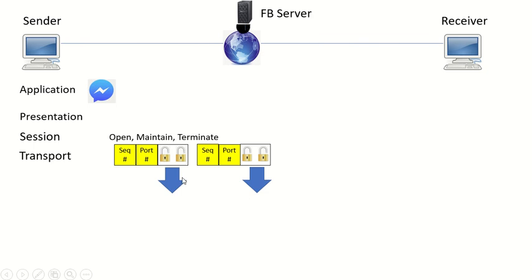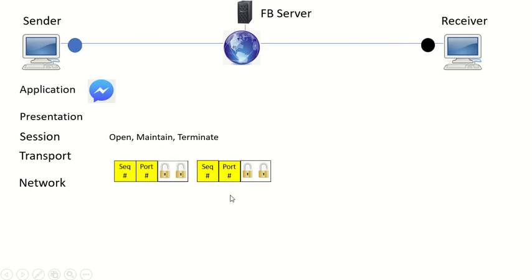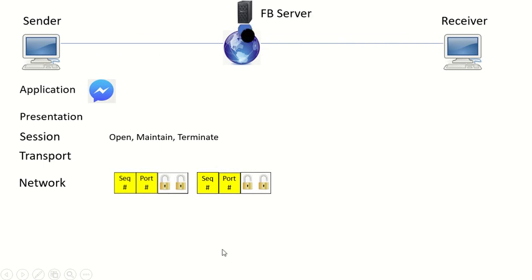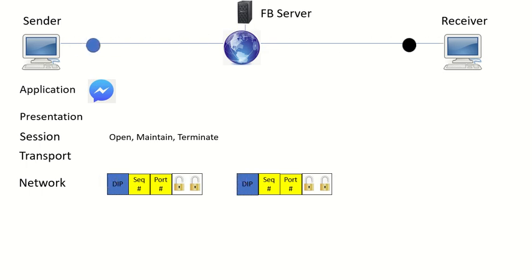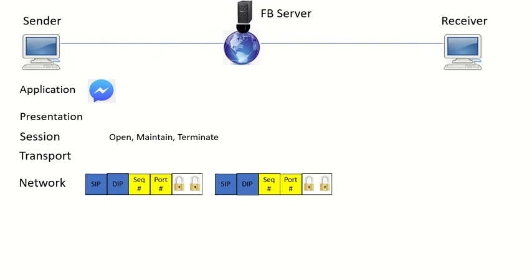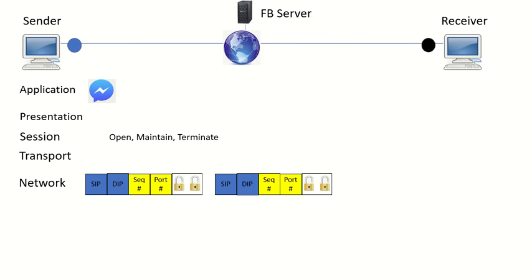After the Transport Layer, the segments get forwarded down to the Network Layer. At the Network Layer, further encapsulation happens — additional headers are added in front of the segment. These headers are the destination IP address and the source IP address. At the Network Layer, logical addressing takes place. Once encapsulated at the Network Layer, your segments are now called datagrams.